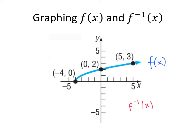We notice that on our original f graph, we have the point negative 4 comma 0. So that means that on our new f inverse graph, we're going to have the point 0 comma negative 4, which is right down here. The x and y values get switched. On our original graph, we had 0 comma 2. So on our inverse graph, we're going to have the point 2 comma 0.